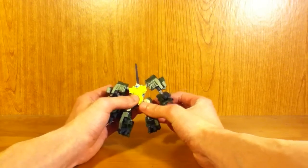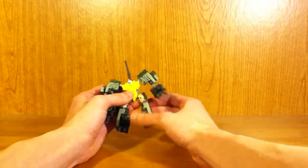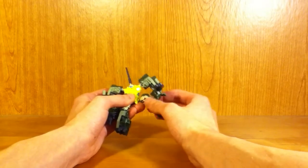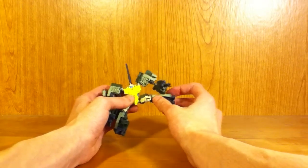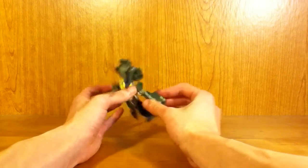He does have ball jointed hips, which are nice. They go back and forth. They also go in and out. But there's really not much you can do with them, since due to the sculpt, they really only go straight out. But oh well. They still are there.